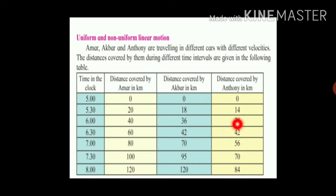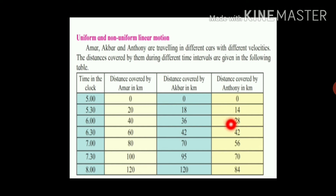Now let's see Anthony's motion. In the first half hour, Anthony travelled 14 km. In the second half hour, he again travelled 14 km — from 14 to 28, meaning 14 km. In the third 30 minutes, he again travelled 14 km — the same distance. So Anthony also travelled the same distance in the same time intervals.